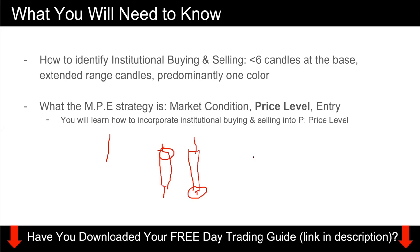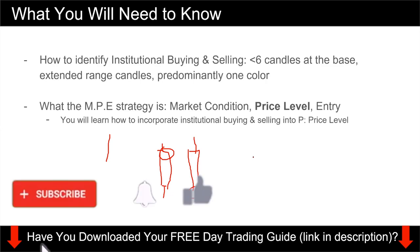So just a brief recap: I talked about how to identify institutional buying and selling — you want to look for less than six candles at the base, you want to look for explosive departure, you want to see extended range candles in either the bullish or bearish direction, and most candles should be predominantly one color. I also showed how to integrate the MPE strategy with institutional buying and selling — P stands for price level, and we're using institutional buy and sell levels as that price level.